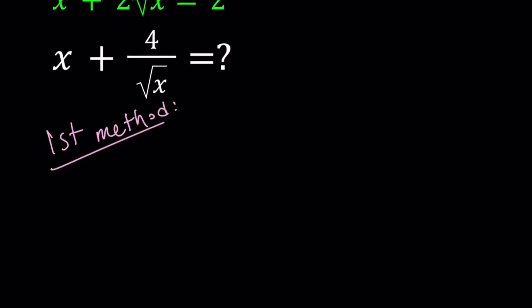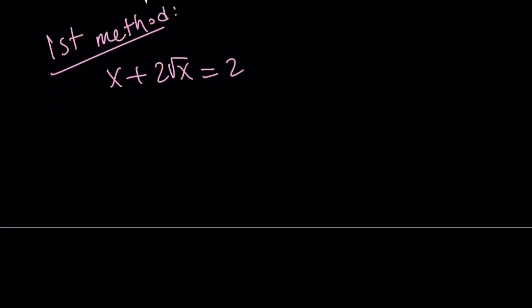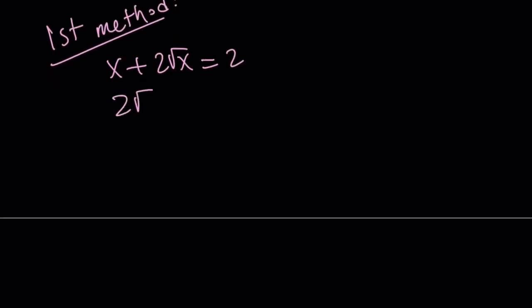Make sure to pay attention to the results because we're going to compare them. All right, so for my first method, I'm going to start with the original equation, x plus 2 root x equals 2. And then I'm going to isolate the radical, 2 root x equals 2 minus x.